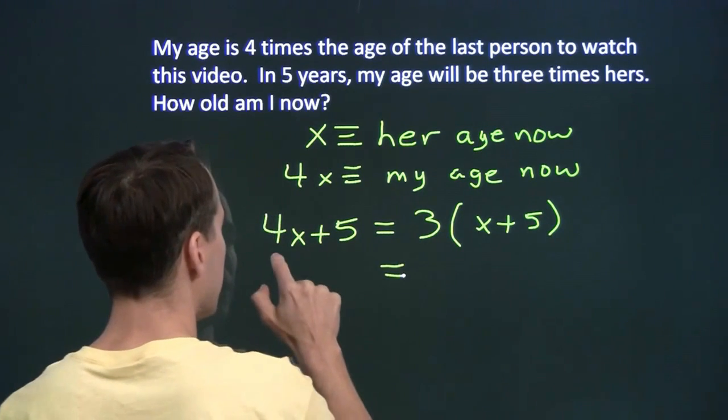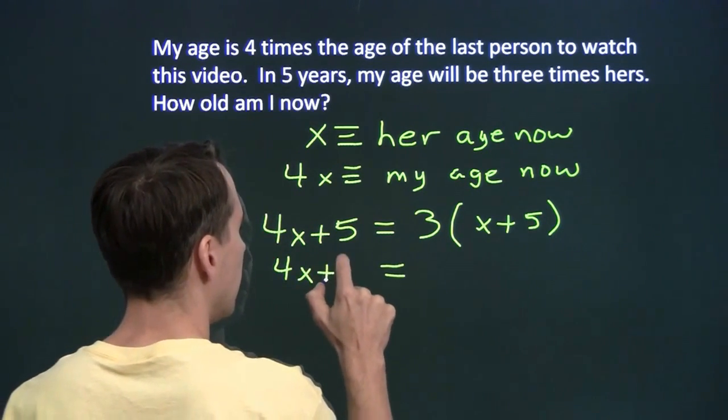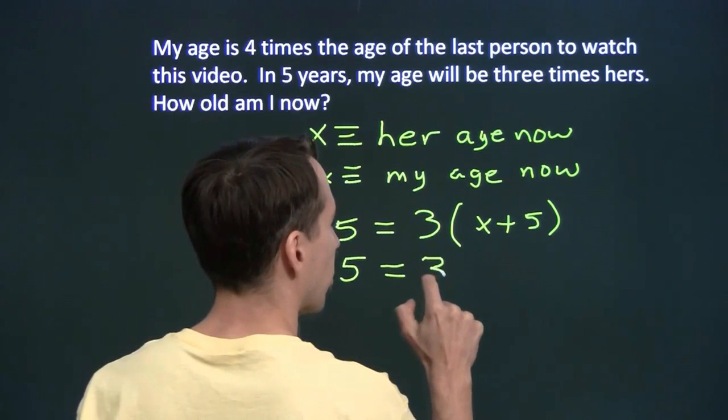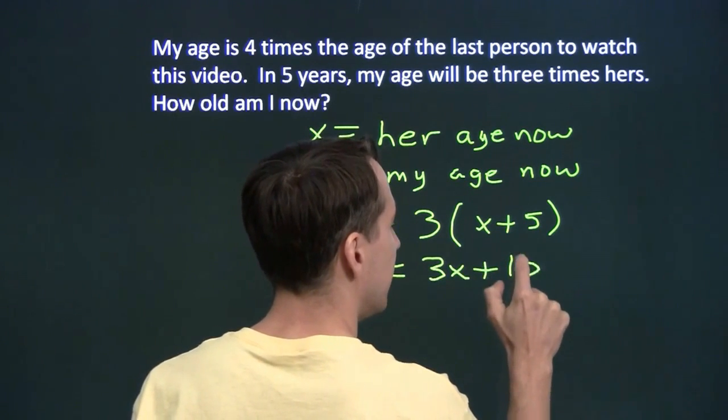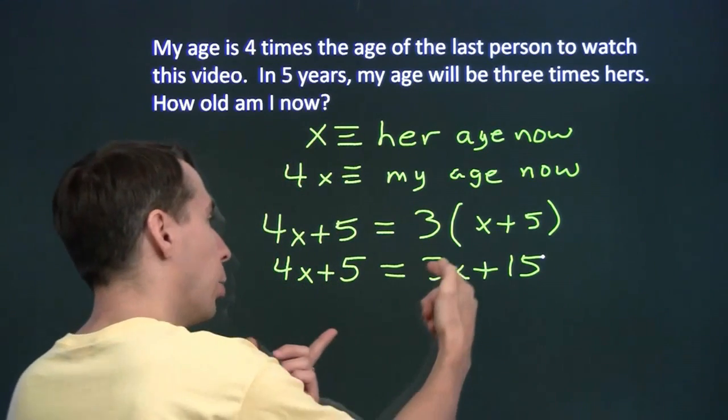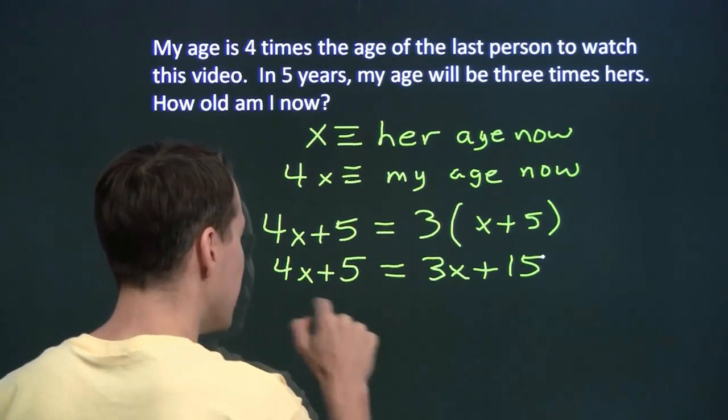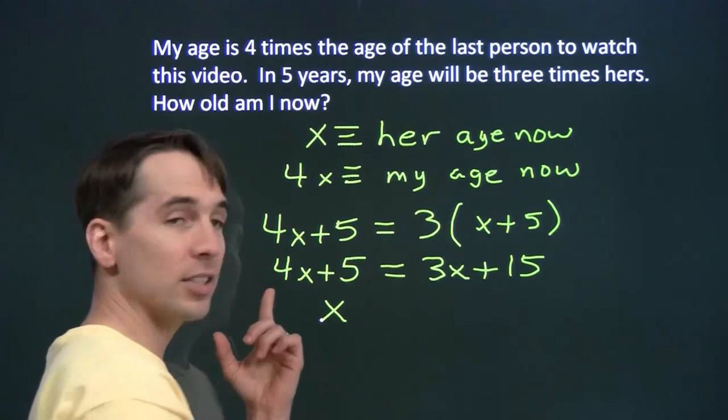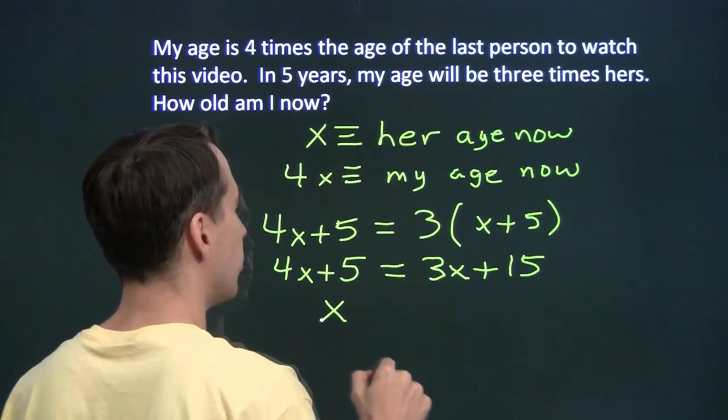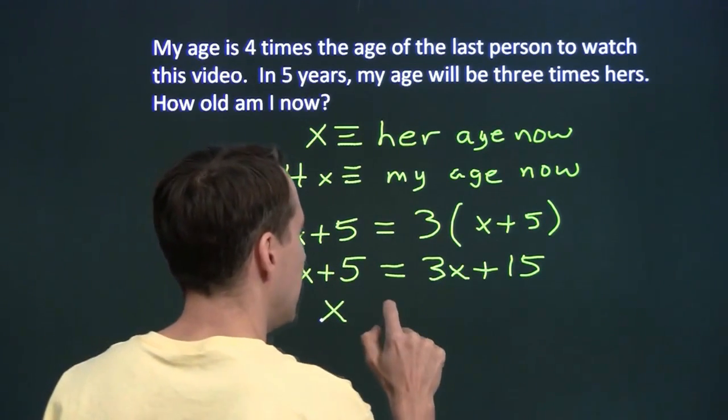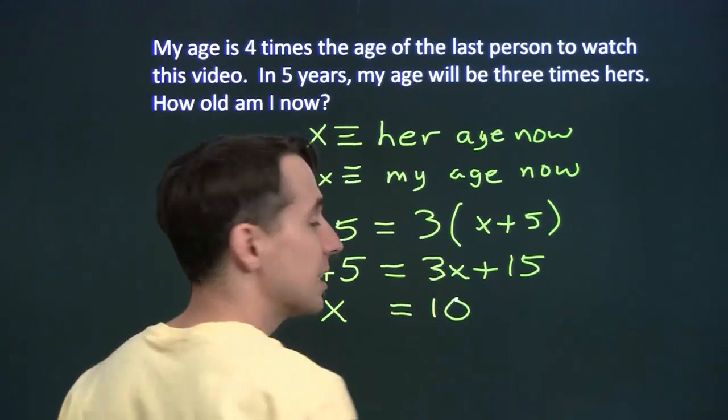We'll expand the right side first. And we'll have 4x plus 5 equals 3x plus 3 times 5 is 15. And we isolate the variable. We'll subtract 3x from both sides. That'll leave us just an x over here. And the 3x is canceled on the right. And then we subtract 5 from both sides. And 15 minus 5 is 10.